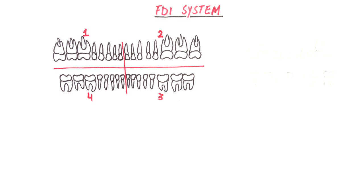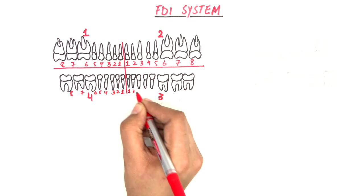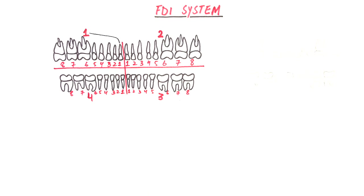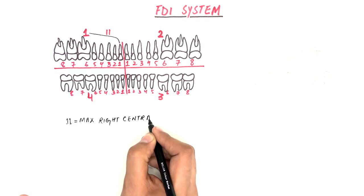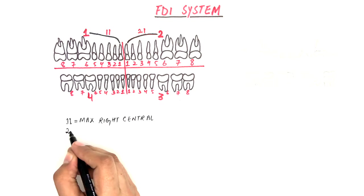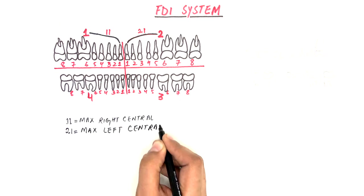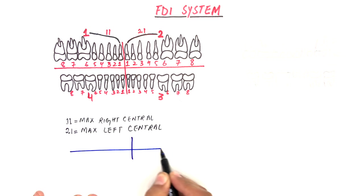The second digit of the two-number system is the tooth number within that quadrant, starting from one to eight. For example, the number 1-1 stands for the maxillary right central incisor in the first quadrant, and 2-1 represents the maxillary left central incisor in the second quadrant. The numbers are pronounced as 'one one' or 'two one,' not 'eleven' or 'twenty-one.' The entire permanent dentition in the FDI system is represented as follows.